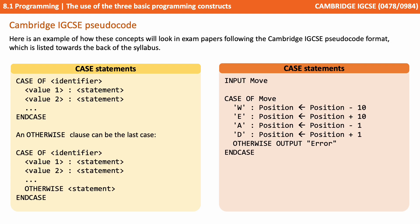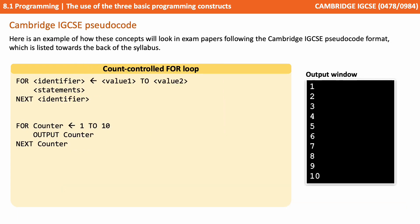Moving on from selection, we look at the first of the iterations, the for loop. So in your exam it'll be 'for identifier arrow' and then the first value 'to' second value, followed by statements, followed by 'next.' So in our example we've got 'for counter becomes equal to 1 to 10, output counter, next counter.' So the first time around this for loop, counter is set to the initial value of 1 and we output 1. We hit next counter which increments counter to 2, and we continue around this loop until we reach 10. You can see the output on the right there.